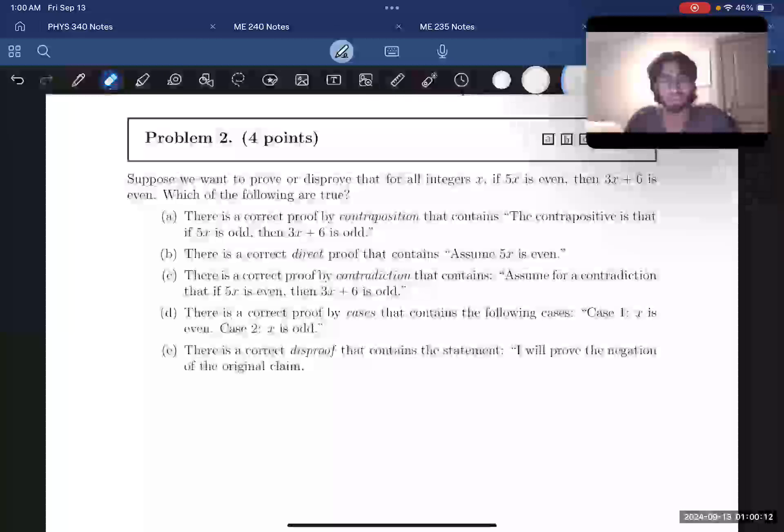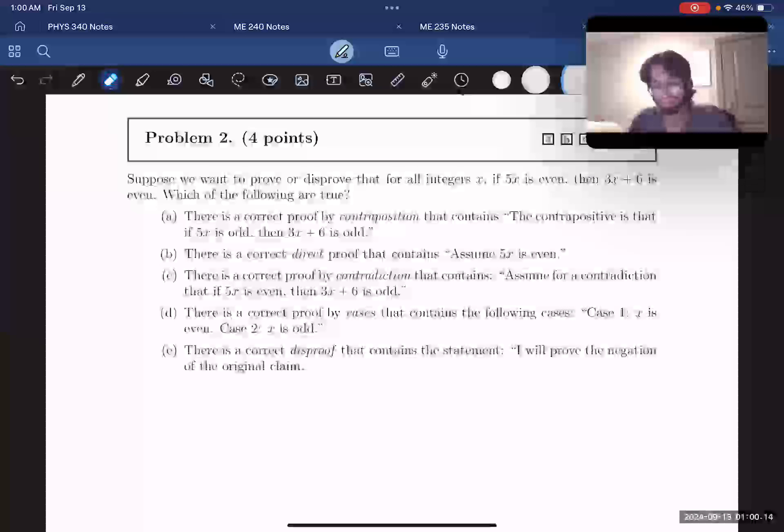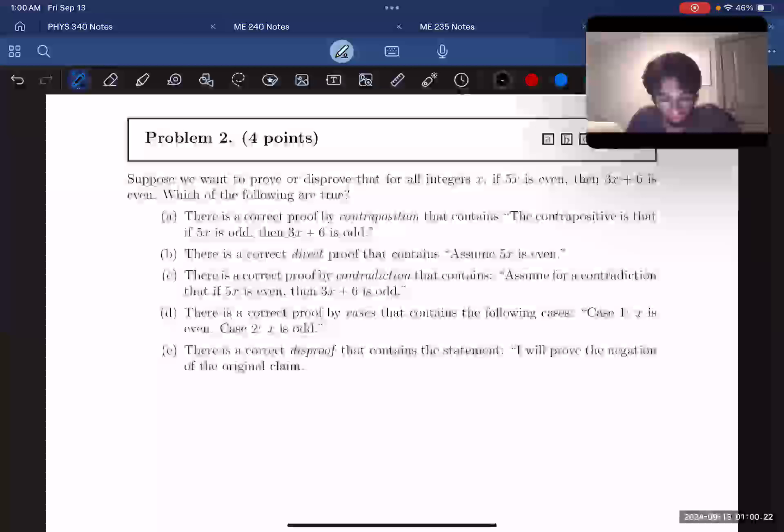This is the Fall 2024 Exam 1 Practice Exam 2 Problem 2. This is a multiple choice question. Suppose we want to prove or disprove that for all integers x, if 5x is even then 3x plus 6 is even, which of the following are true? We're given the lines to a bunch of different types of proofs we could do.